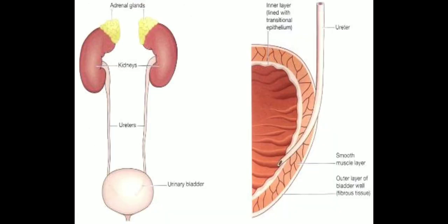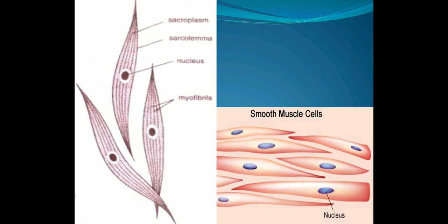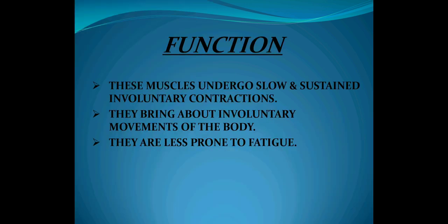Smooth muscles are innervated by the autonomic nervous system, found in the walls of visceral organs and blood vessels. They may be arranged lengthwise — that is, longitudinal muscles — or around the circumference — that is, circular muscles — of any organ. These muscles undergo slow and sustained involuntary contractions, meaning these actions are not under your control. They bring about involuntary movement of the body and, as contraction is very slow, they are less prone to fatigue.